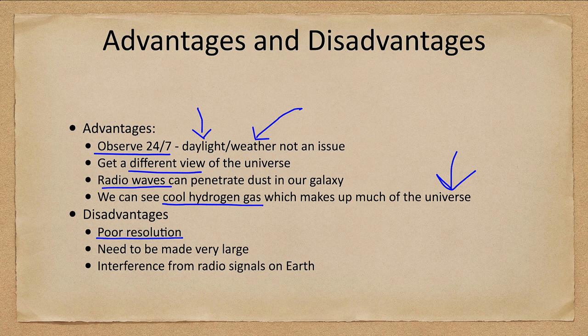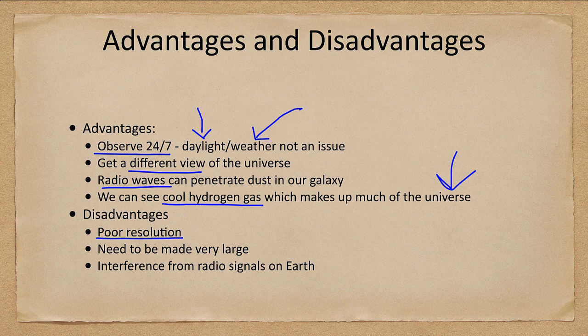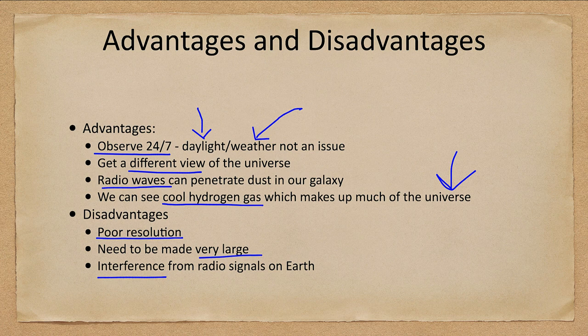Some of the disadvantages include poor resolution. Resolution depends on the wavelength of the light being observed and the size of the telescope. A big telescope helps, but a long wavelength like radio waves hurts, so you need to make very large radio telescopes to get decent resolution. You also get interference from radio signals on Earth — just as we have light pollution with visible light, we have pollution from radio signals.